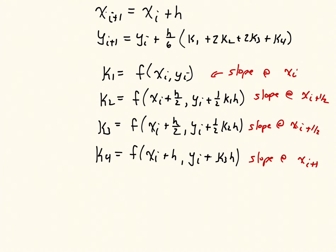You put those four slopes together in this combination — k1 plus 2k2 plus 2k3 plus k4 — given by the equation at the top. That gives us the entire Runge-Kutta method.